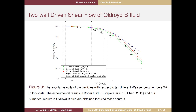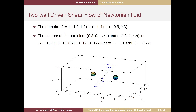Lambda-2 is retardation time and lambda-1 is relaxation time. So we have two different time scales. These are the two angular velocity validations we performed. Next, we put two particles in the fluid to validate behavior in Newtonian and non-Newtonian fluids — first Newtonian, then Oldroyd-B type non-Newtonian fluid.